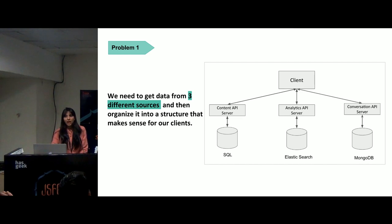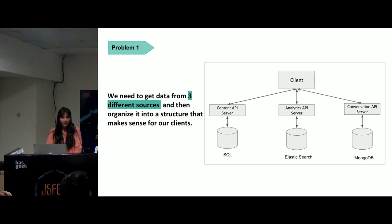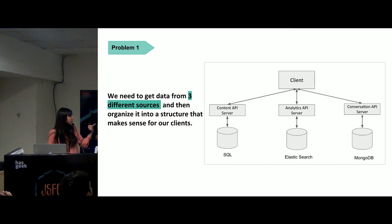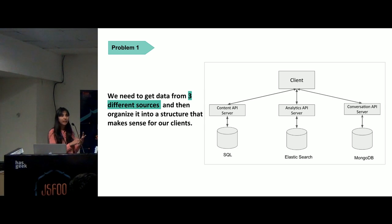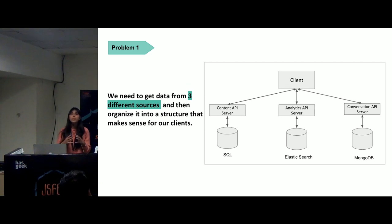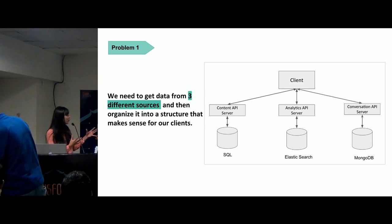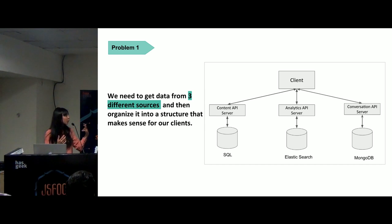Over the next 30 minutes I'm going to talk about how we went from slow and sluggish to how GraphQL came to our experience. The first problem we faced was the sheer number of APIs. We needed to get data from three different resources and organize it into a structure that made sense for our clients. The client was talking to three services — the content API, the analytics API, and the conversation API — and the worst part was these API calls couldn't be made in parallel, because we had to wait for the response from the content API before we could fire the analytics API and the conversation API.